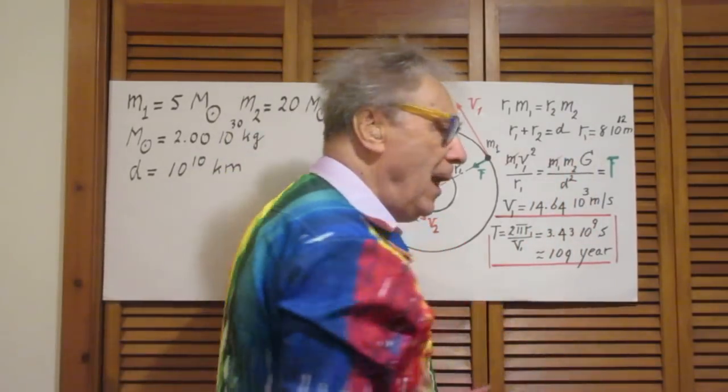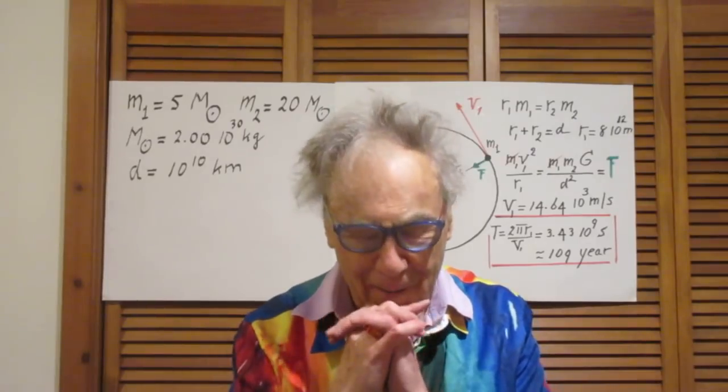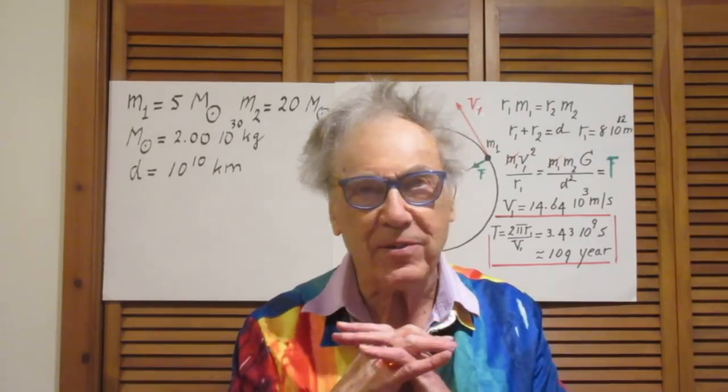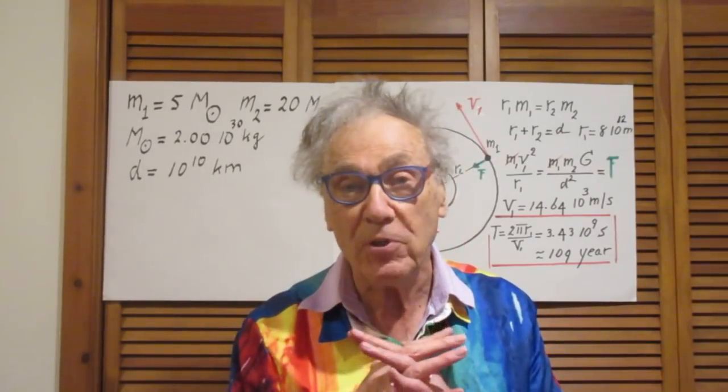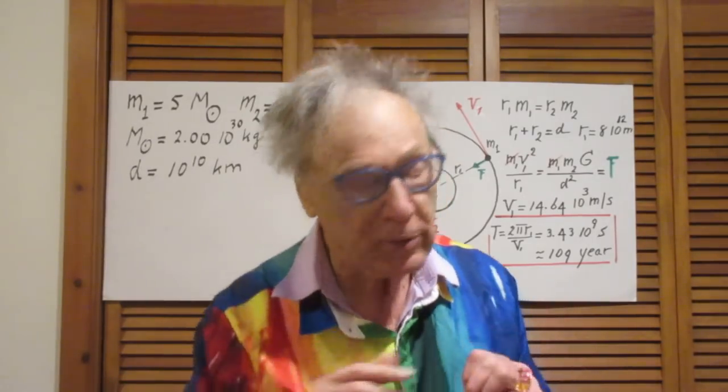G, by the way, by now you should remember, or you can look it up of course, that's perfectly okay. G in SI units, I even remember it, is 6.7 times 10 to the minus 11 in SI units.